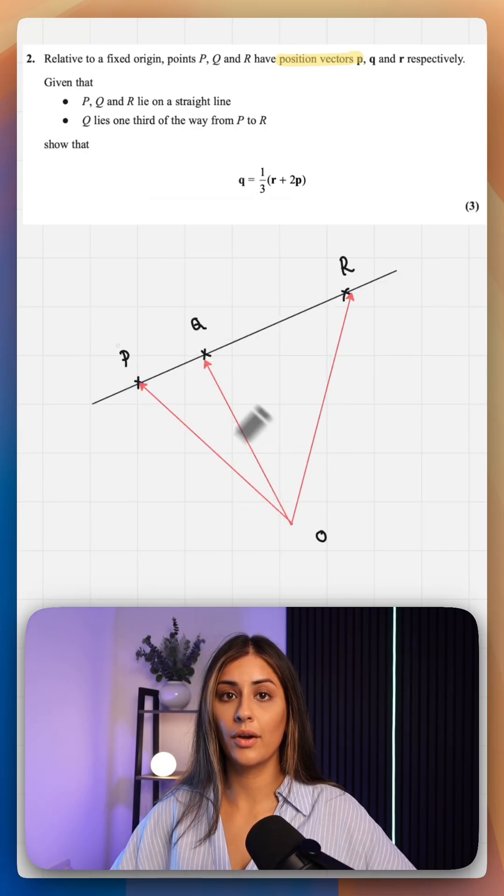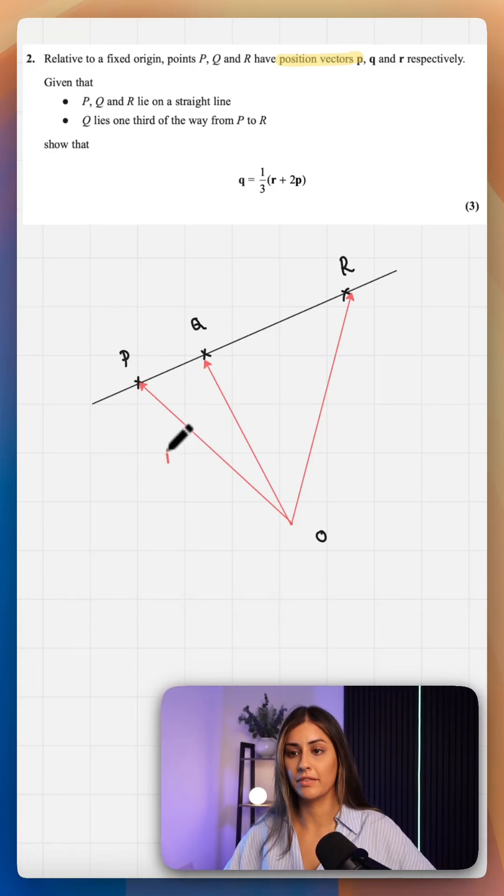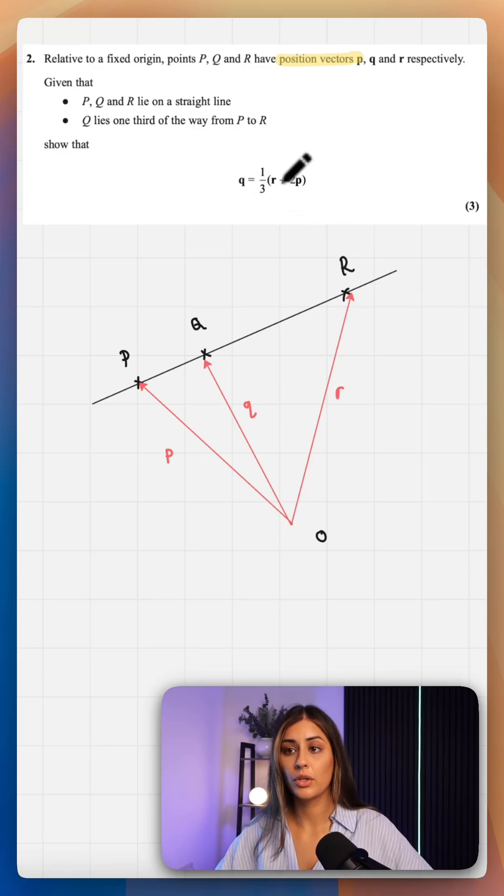The line joining O to P is your position vector P. That's your position vector Q and that is your position vector R. So we want to show Q in terms of R and P.